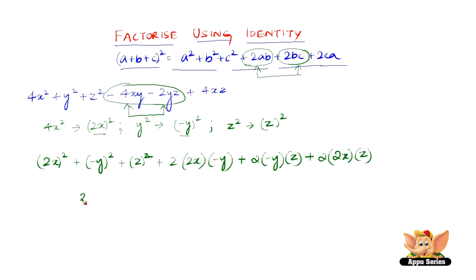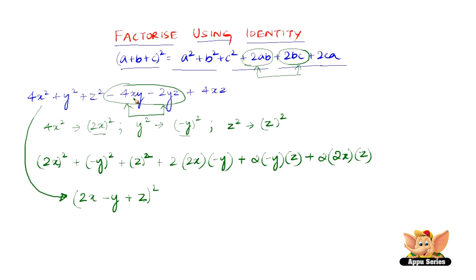Therefore, we can write this as (2x - y + z)². So (2x - y + z)² is the factorized form of 4x² + y² + z² - 4xy - 2yz + 4xz.